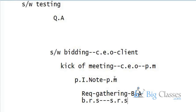First, at the software bidding stage, the CEO goes to the client site and finalizes the project. Then at the kickoff meeting stage, the CEO comes back to the organization and arranges a meeting with all project managers to select the project manager. Once the project manager is selected, the project manager prepares the first document called the Project Initiation Note.